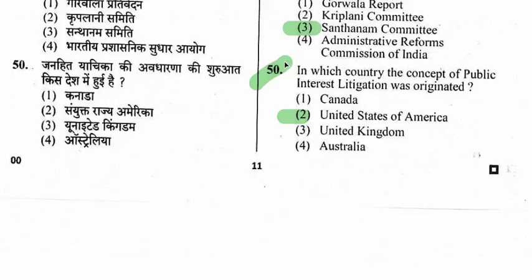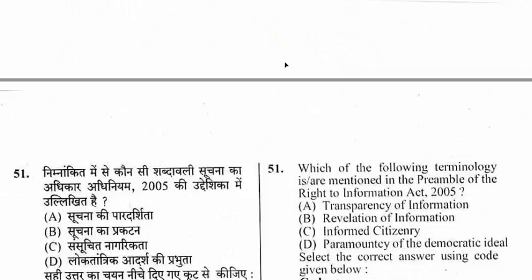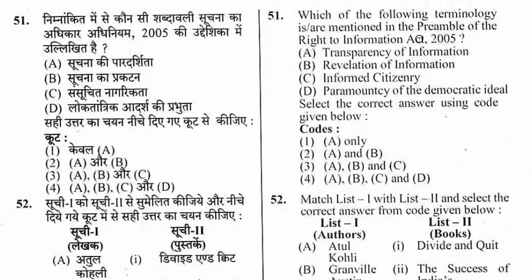Question 51: Which of the following tenets are mentioned in the Preamble of the Right to Information Act? Options are transparency of information, revelation of information, informed citizenry, and paramountcy of democratic ideal. The right option is the fourth one — A, B, C, and D: all of these.